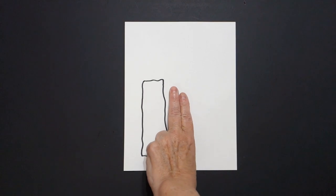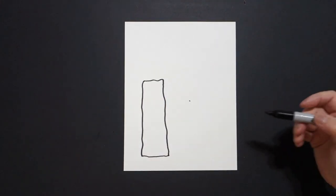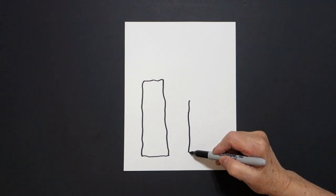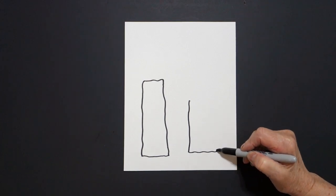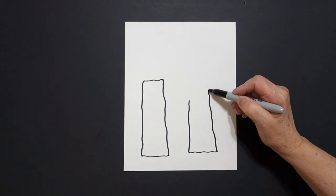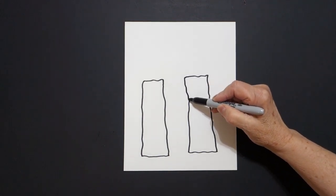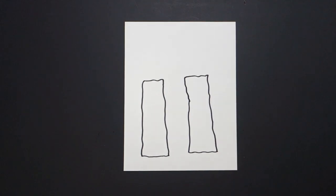I take two fingers again, put a dot, and I'm going to draw a slightly wavy line down, slightly wavy line over, slightly wavy line up, slightly wavy line over, slightly wavy line down, and connect.